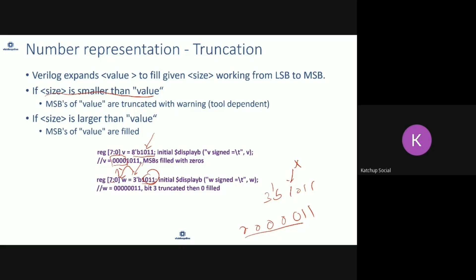Basically, whenever you define a number, it is best to use the right set of bits. If you give fewer bits than the declared size, the additional upper bits are thrown away. If you give more bits than needed, the value will be zero-extended or sign-extended. When sign extension applies versus when it does not, we'll cover a little bit later.